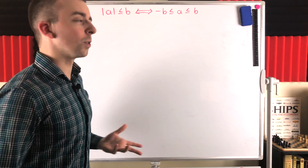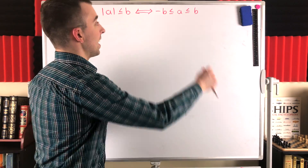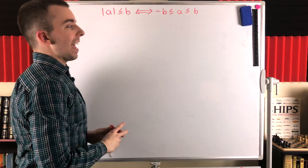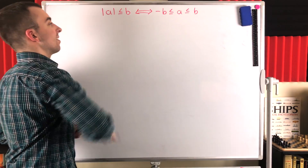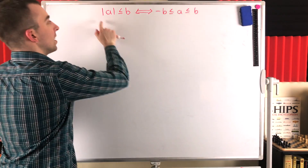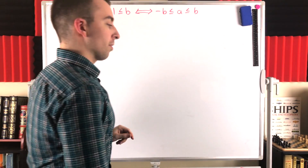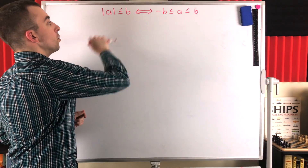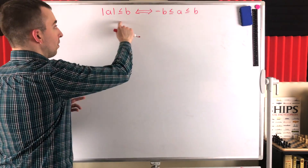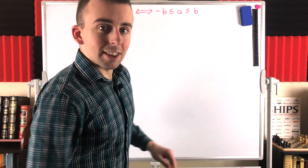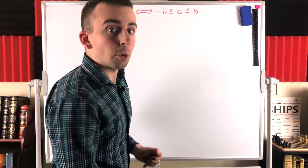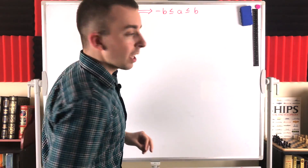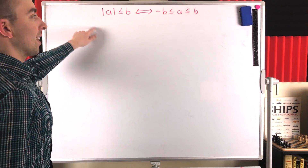So the basic idea here: if this string of inequalities holds, then B is further away from the number line than A. Whether A is positive or negative, B is more positive than A and negative B is more negative than A. So the magnitude of A — its absolute value — will be less than or equal to B. And of course the other direction holds as well. This is a useful result: if we know that the absolute value of a number is less than or equal to some other number, this result gives us a way to jump to an inequality that gets rid of the absolute value function. Additionally, going the other way, it gives us a strategy to prove that the absolute value of a number is less than or equal to some other number — we just have to prove that this relationship is satisfied.